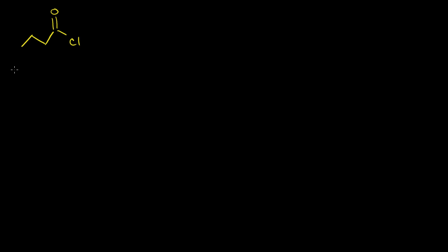Let's think about what might happen if we had a molecule of butanoyl chloride. One, two, three, four carbons — that's where the 'but' comes in. And then it's a butanoyl chloride, so it's an acyl halide, or it's an acyl chloride. Let me write this down just to give us some practice with naming. This is butanoyl chloride.